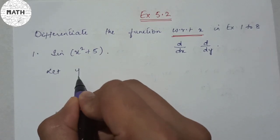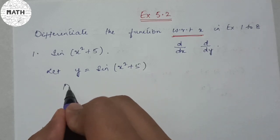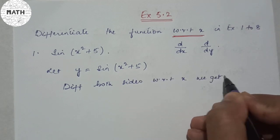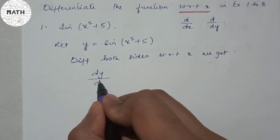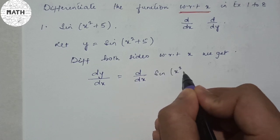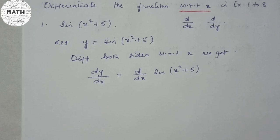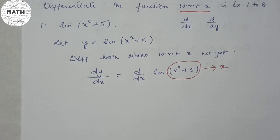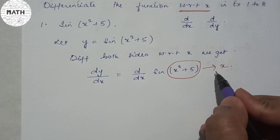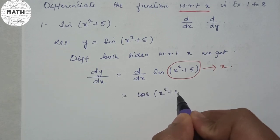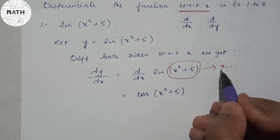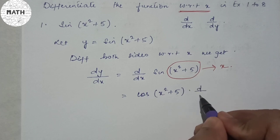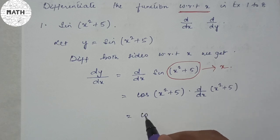Question 1: Let y = sin(x² + 5). Differentiating both sides with respect to x, we get dy/dx = d/dx of sin(x² + 5). Imagine the inner expression x² + 5 as your x. Then d/dx of sin(x) is cos(x), so we get cos(x² + 5), and then we must differentiate the inner part x² + 5 once again.